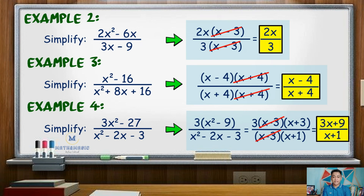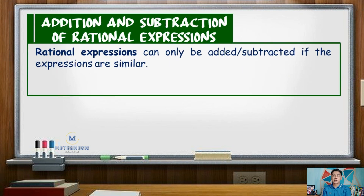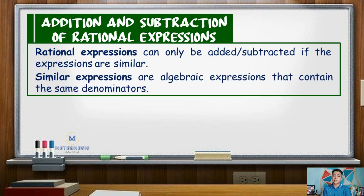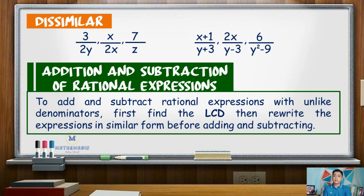After knowing how to simplify rational expressions, we can now perform its operations. For addition and subtraction of rational expressions, we need to consider similarity. Two or more expressions are said to be similar if they contain the same denominators. In cases where the denominators are different, we need to convert the rational expressions into similar form by finding the LCD, or least common denominator.